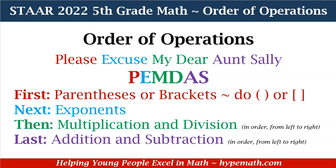So that means if you have division first and then multiplication in an expression, you don't go to the multiplication first — you go in order from left to right. Last, we have addition and subtraction, and remember, this is also in order from left to right.